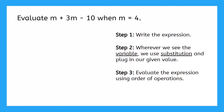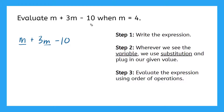Let's give it a try. Step 1 — I write the expression in my own handwriting: m plus 3m minus 10. Step 2 — wherever I see the variable, I use substitution and plug in the given value. In my expression I have two variables: in the first term I have an m, and in the second term I have 3 times my variable m. The given value is up here where it says m equals 4, so wherever I see my variable I'll plug in 4.